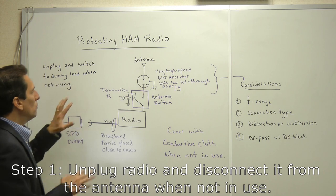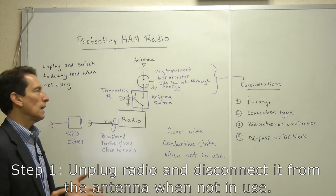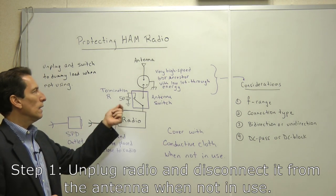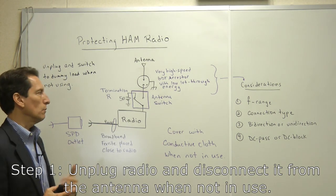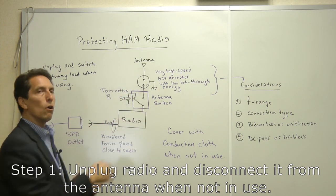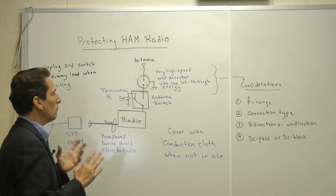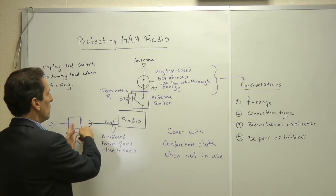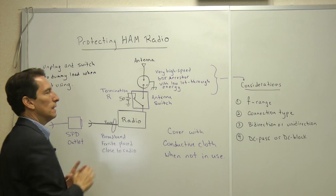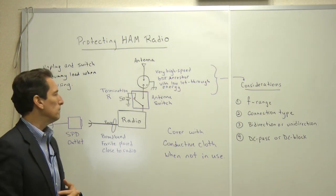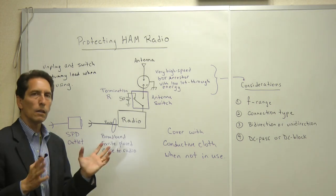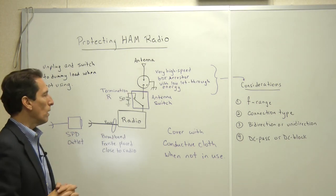So I've gone ahead and modified the drawing with the protections that I recommend. The first thing to know is that when you're not using the radio, it's just sitting idle and not using it, you should unplug it and you should switch the antenna over to some kind of a dummy load. The idea is to get the radio where it doesn't have any long connections to it when the radio is not being used. So you'll unplug it from the wall so that it doesn't have power and you'll disconnect the antenna through an antenna switch.